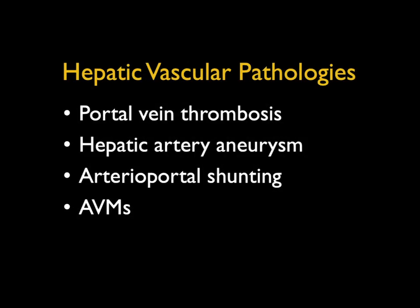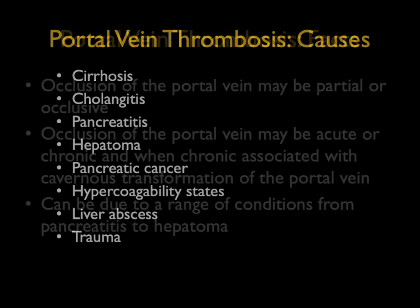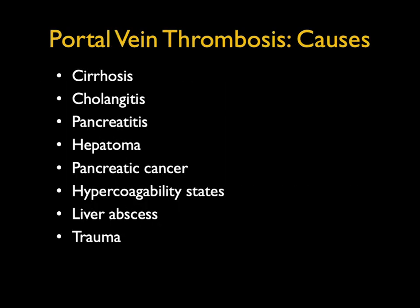What about vascular pathologies? Beyond hepatic artery aneurysm, venous as well as arterial pathologies are something to think about. Portal vein thrombosis — occlusion of the portal vein — may be partial or occlusive, acute or chronic. When chronic, it's more commonly associated with cavernous transformation of the portal vein. It can be due to inflammatory conditions like pancreatitis, or due to tumor infiltration such as neuroendocrine tumor or hepatoma. The list of causes includes cirrhosis, cholangitis, pancreatitis, hepatoma, pancreatic cancer, hypercoagulability states, abscess, and trauma.